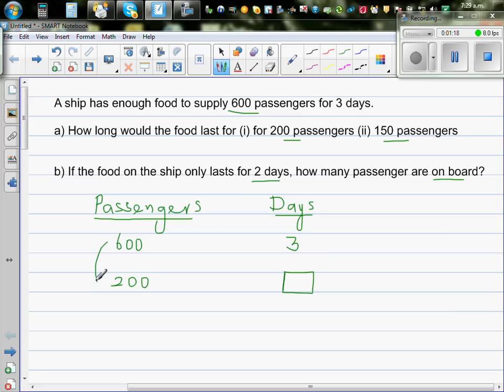So 200 is how many times 600, or there are how many lots of 200 in 600? Well, there are 3 lots of 200 in 600. So I can say 600 divided by 3 gives you 200. So if this is one third of 600, this should be 3 times. So you have to multiply this by 3. The answer is 9 days.